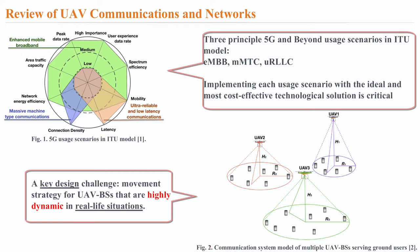In another case, UAVs can be properly deployed to function as forest fire surveillance and also enable cellular service recovery. Based on a review of recently published papers, we found that one key design challenge is to determine the movement strategy for UAVs, since in real-life situations the environment where UAVs are deployed is highly dynamic. It is really critical for UAVs to adjust their locations regularly to cope with varying conditions. Furthermore, utilizing machine learning techniques for UAV communications has recently seen unprecedented growing popularity.